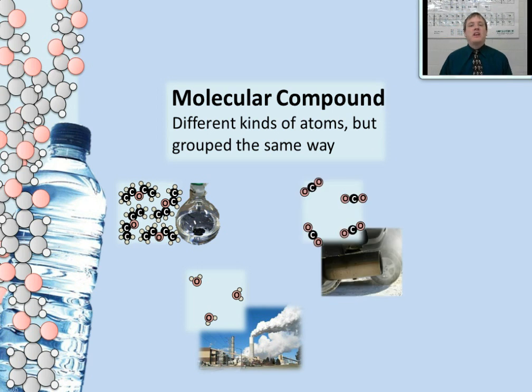Another example of this would be carbon dioxide, a substance which is released from the tailpipes of cars, from power plants, and from many other places. Carbon dioxide molecules are all made of one carbon bonded to two oxygens, and because these molecules are made up of different types of atoms, but they're bonded together the same way throughout, this is a molecular compound.